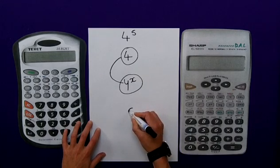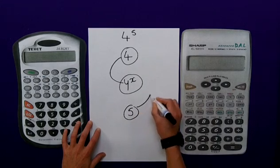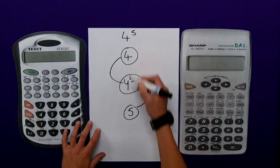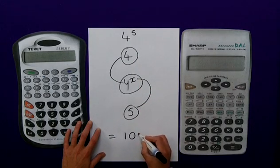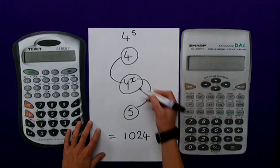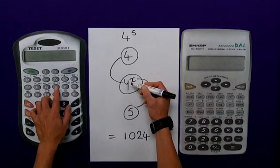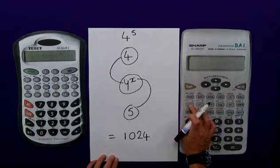I then simply type in the 5 which refers to the x. 4 to the power of 5. Press the equals button and that's 1024. Now the y to the x button on this calculator is here and the y to the x is here.